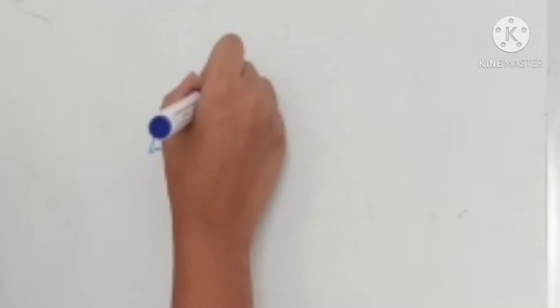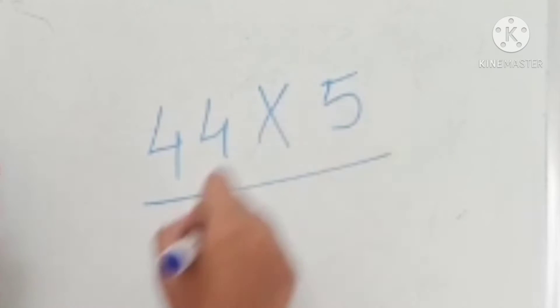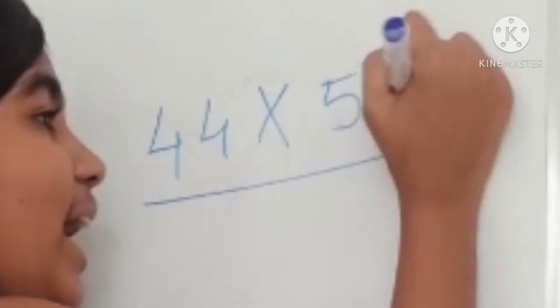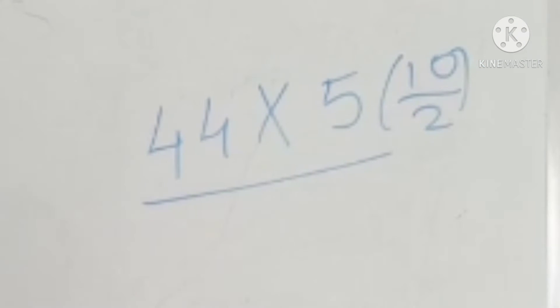Let's take small examples to understand. Let's take 44 multiplied with 5. So 5 is nothing but 10 divided by 2. You'll say why 10 divided by 2? Why can't it be 20 divided by 4? Because the nearest base to 5 is 10, so we'll take 10.